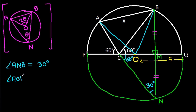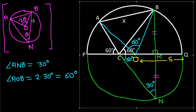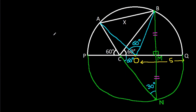So angle AOB will be 2 times 30 degrees, which equals 60 degrees. This angle will be 60 degrees. We have the radius equal to OQ, which is 5.